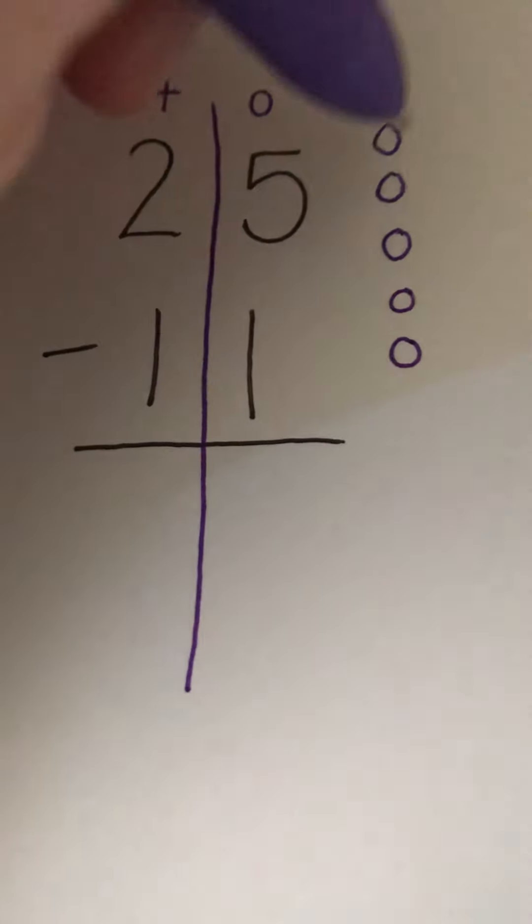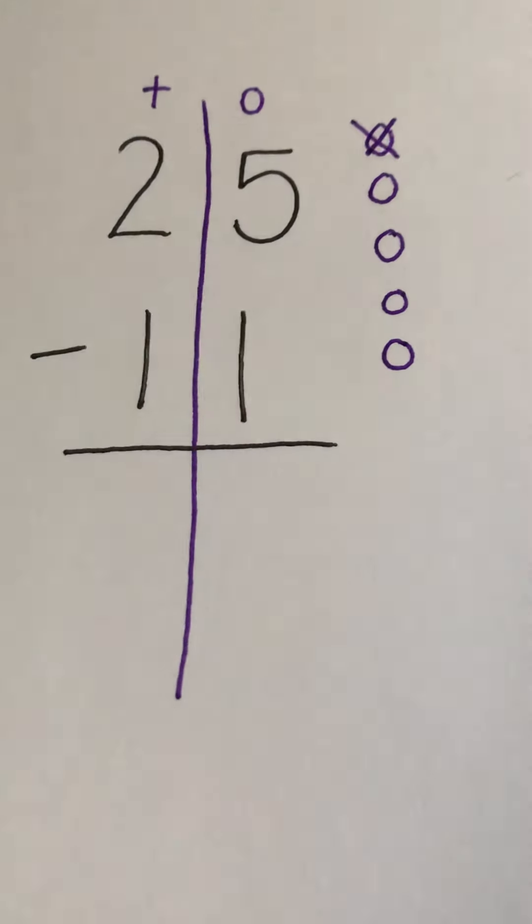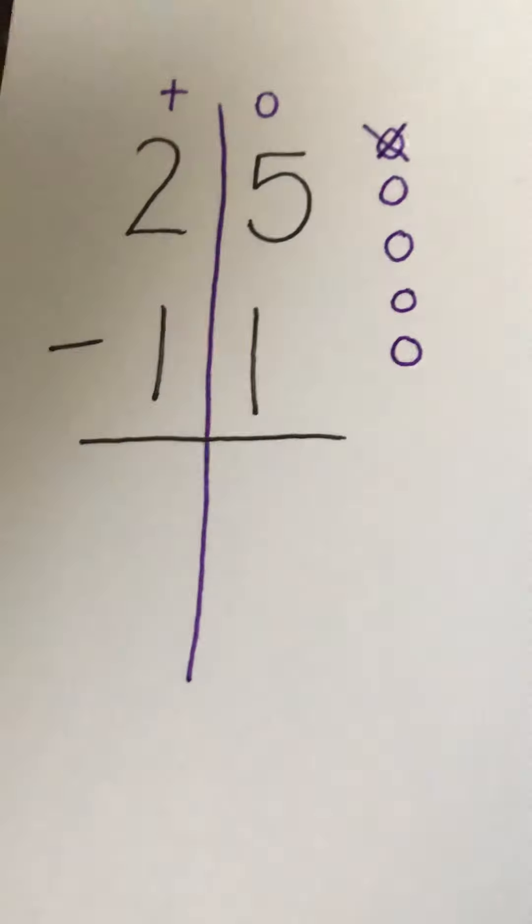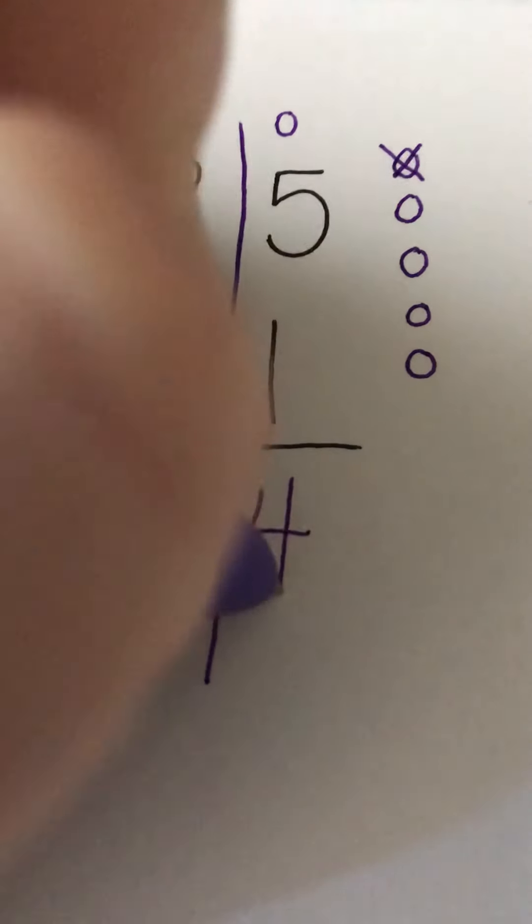And I'm only taking away one. So I'm going to cross one circle out. I have one, two, three, four left. So five minus one equals four.